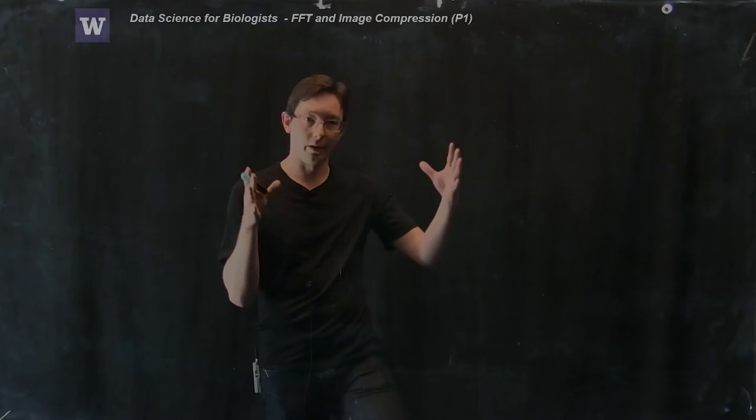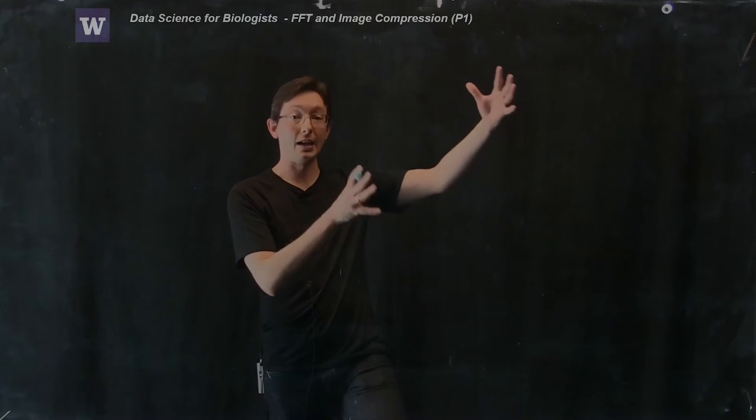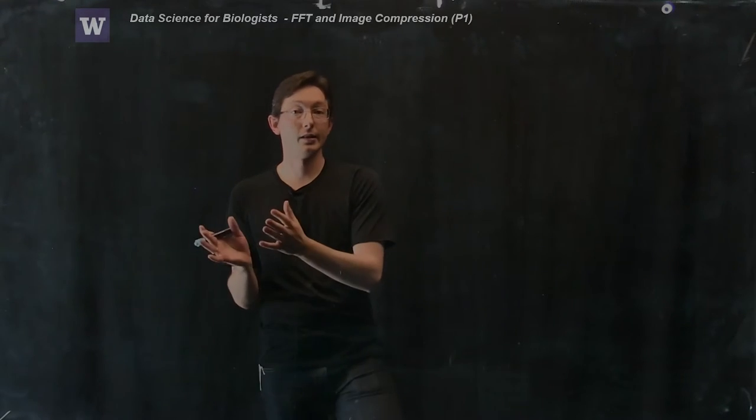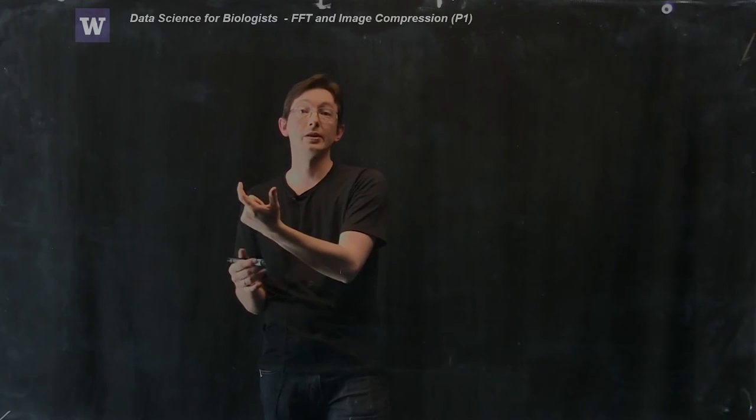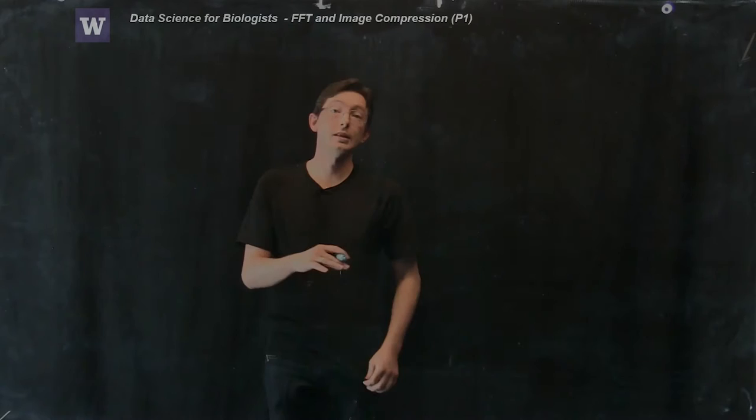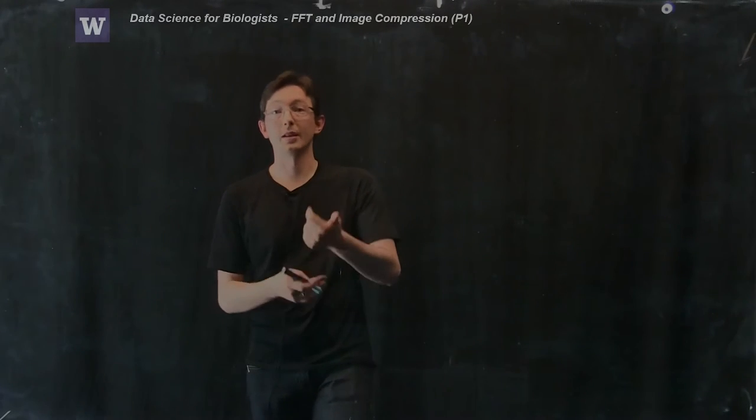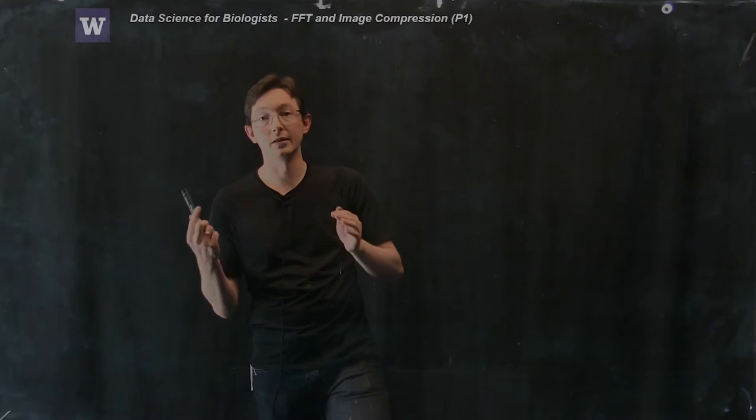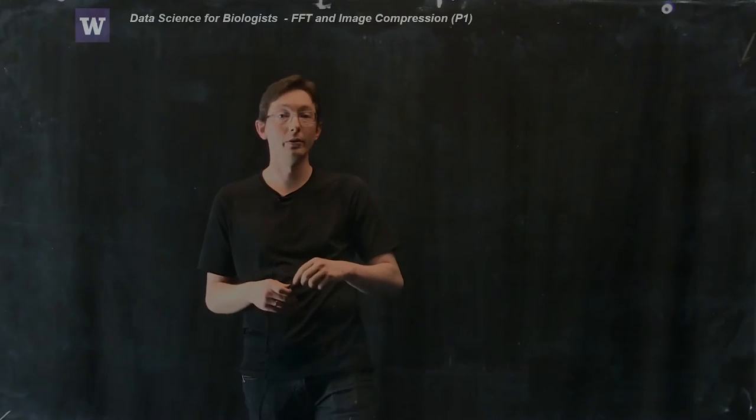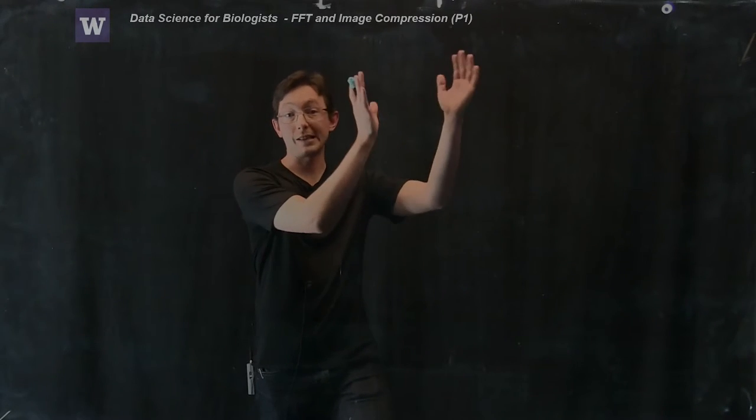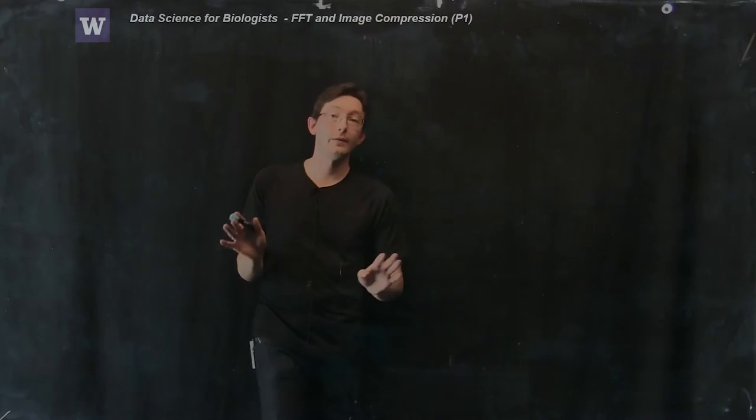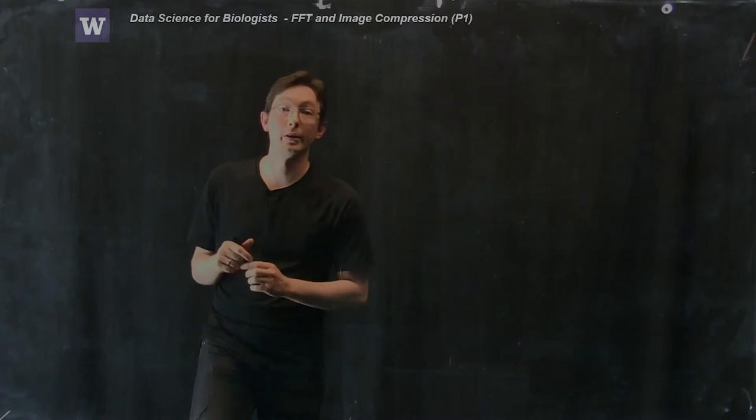At the end of this lecture we're going to be able to take in images and compress them using fast Fourier transforms and essentially store these images with way less data. This is what's happening when you send a picture over the internet to a friend or when you're streaming a movie to your TV or computer or phone. You're essentially using the fast Fourier transform for image compression. This is one of my favorite lectures. I hope you enjoy it as much as I do.